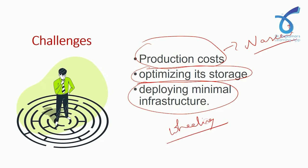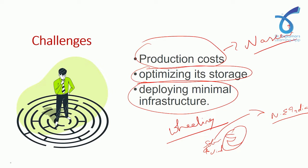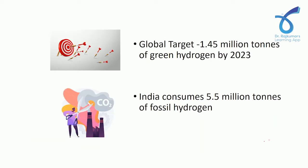Wheeling refers to the transport of electricity from one region to another. For example, in India, Rajasthan and Gujarat have large-scale solar and wind energy, but transporting that energy to northeast India would be very expensive. This is a major factor limiting the production of green hydrogen. Looking at the global scenario, there is a global target of 1.45 million tons production of green hydrogen by 2023.